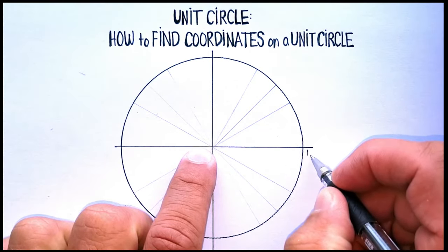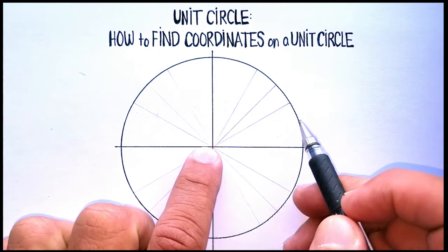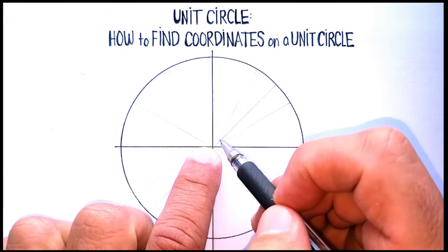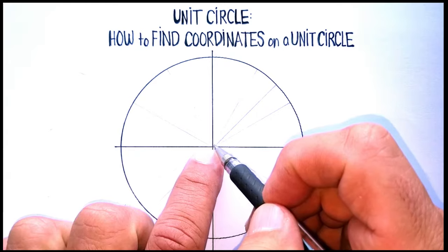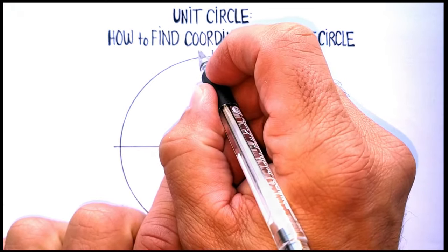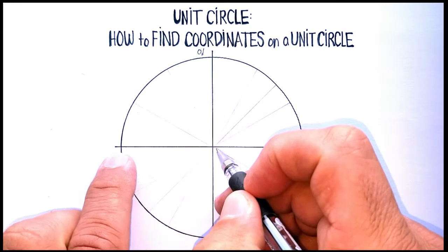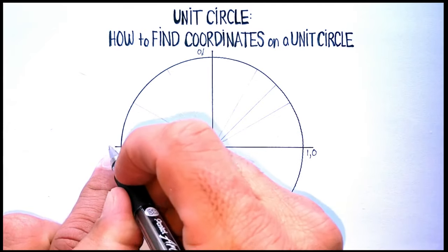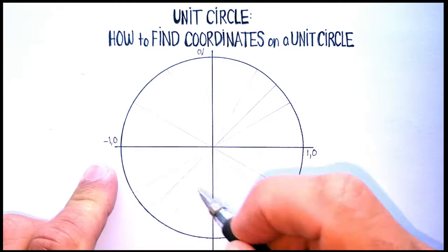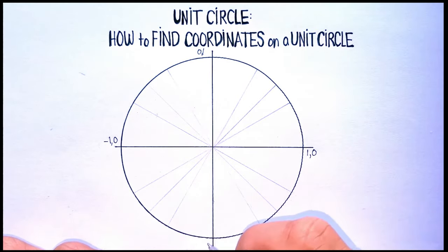Let's go ahead and mark that: (1, 0). And because it is a unit circle, all the way up here is also a radius of 1. So the coordinate there would be (0, positive 1). The coordinate over here would be negative 1, 0. And the coordinate down here would be (0, negative 1).